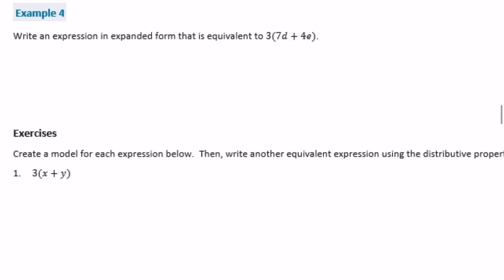Example 4: write an expression in expanded form equivalent to 3 times (7d plus e). Distributing the 3: 3 times 7d = 21d, plus 3 times 4e = 12e. So the answer is 21d plus 12e.